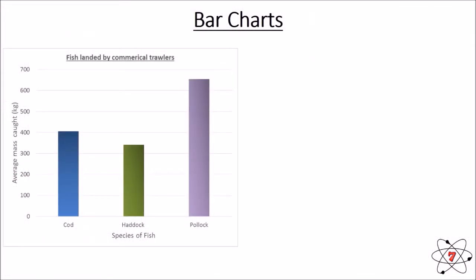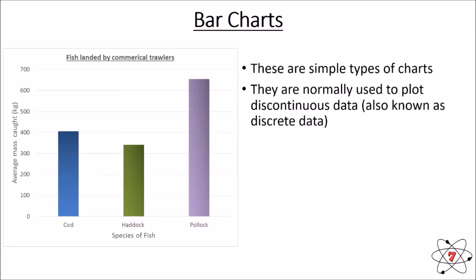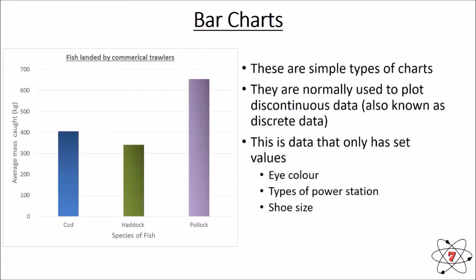First type of graph we're going to look at are bar charts. Now, these are simple charts, and they are used to plot data that we call discontinuous data or discrete data. Discrete data is data that only has set values. So, things like eye color, types of power station, or shoe size. Now, it's the independent variable that is normally discontinuous or discrete. So, the example we have here, we have the amount of fish landed by commercial trawlers. So, we've got cod, haddock, or pollock. These are set variables. You cannot have a fish halfway between cod or pollock. So, we must use a bar chart to represent this.